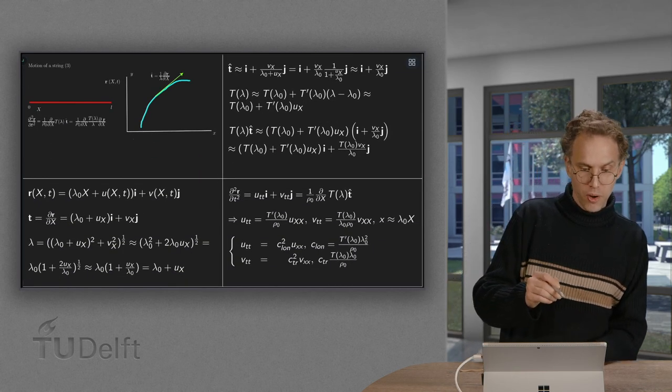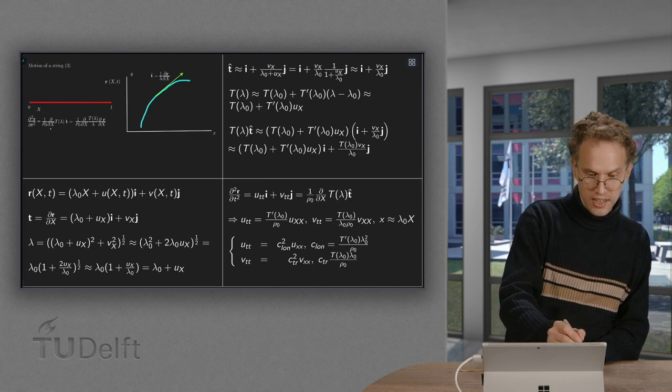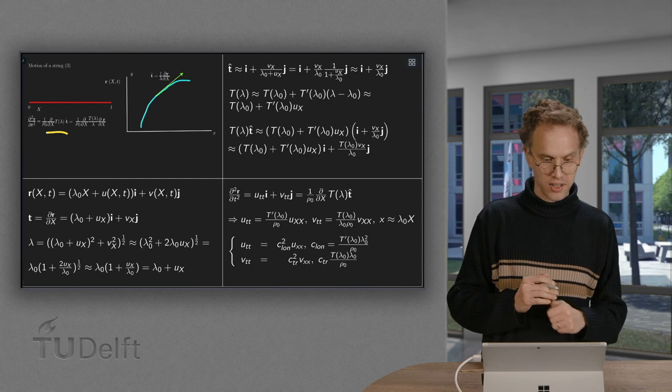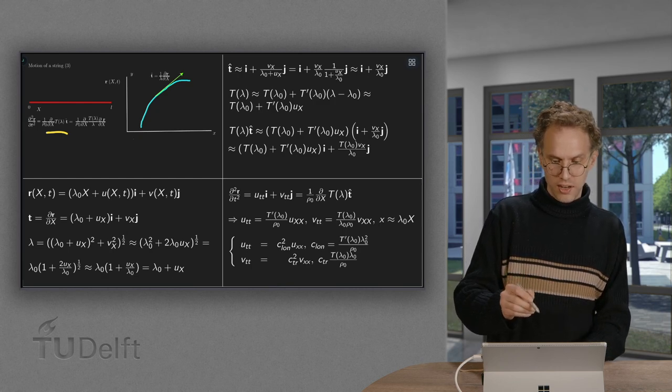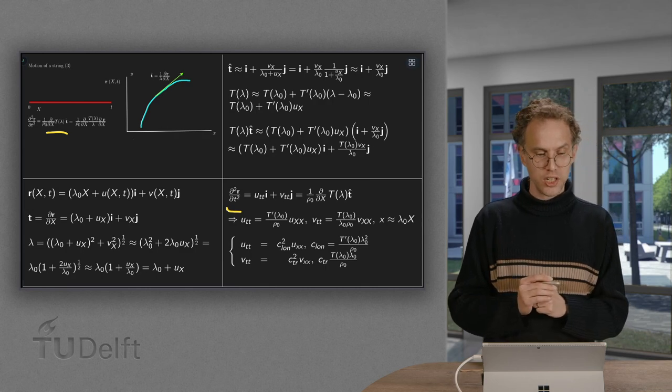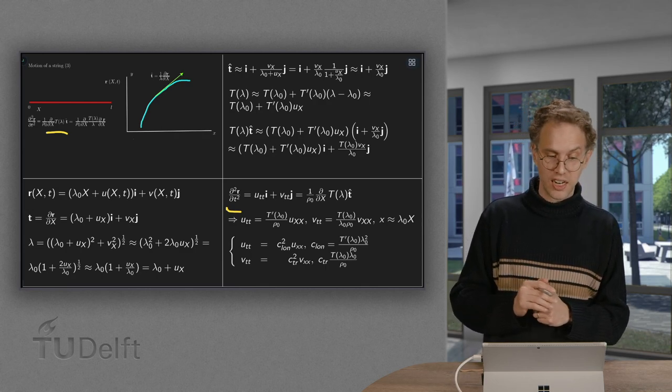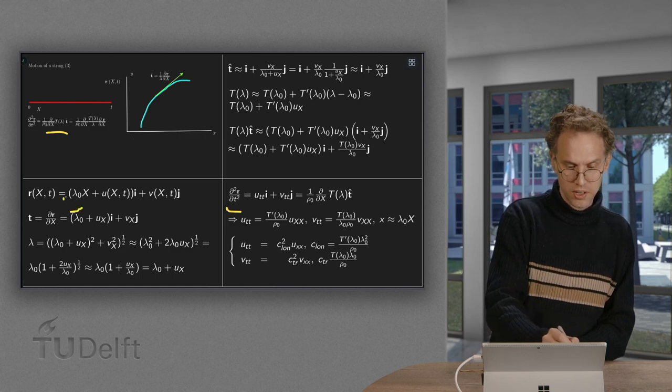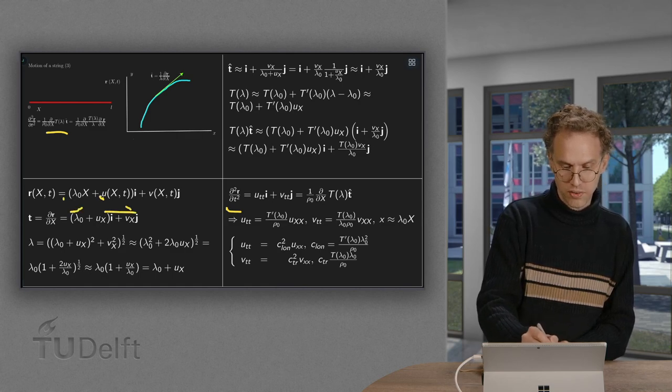Then almost done. We take the d dx of t of lambda times t hat. Because that's equal to the second derivative of r with respect to t squared. While the left hand side is easy. If you differentiate with respect to time this part drops out. And you only differentiate this one and that one. So that's for the left hand side.